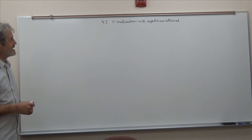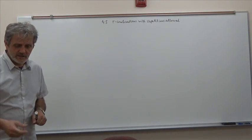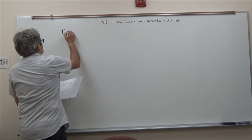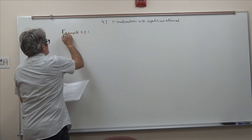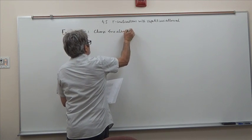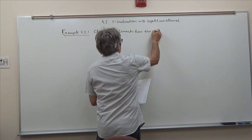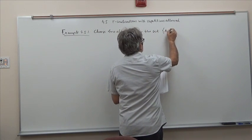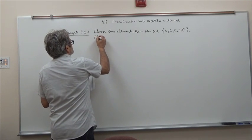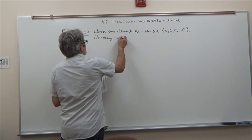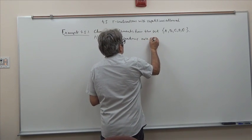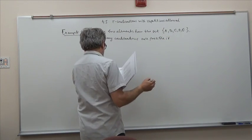Hi, our topic for today is combinations with repetitions allowed. To introduce the topic, let me do an example first. Example 4.5 says: choose two elements from the set {A, B, C, D, E}. How many different combinations are possible if repetitions are allowed?